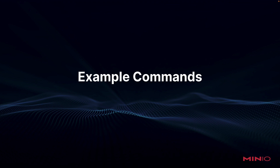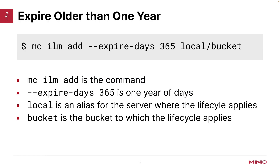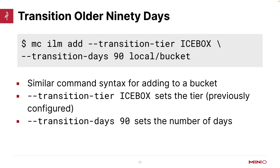Let's take a look at a few example commands. If I want to expire everything older than one year, I do an MC ILM add with expire days 365 on the local bucket. This applies to only the current object, and after a year it will delete it. For a transition, I use MC ILM add with transition days 90 and the transition tier icebox. That icebox tier was set up earlier and is server-wide, but I can use it on this local bucket — anything over 90 days old will be transitioned.